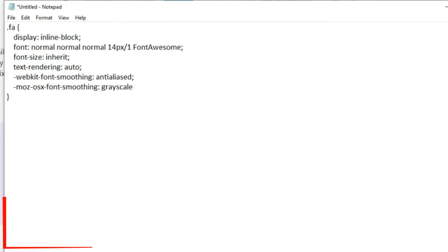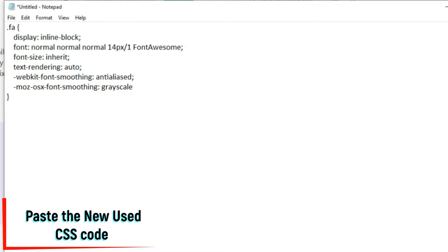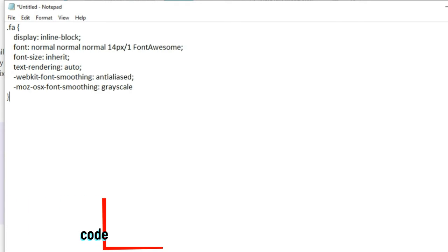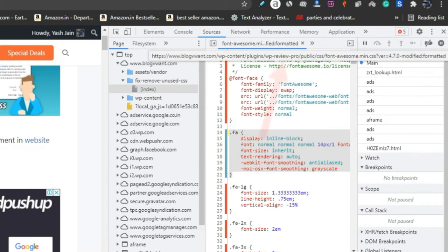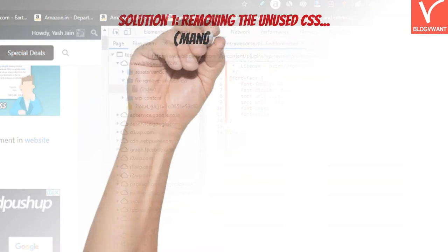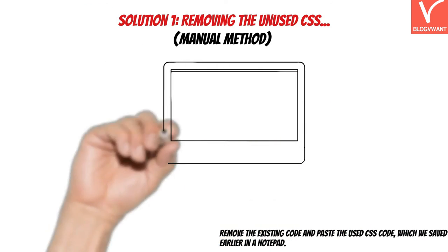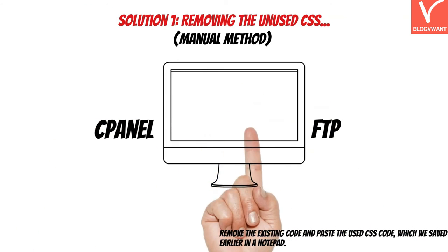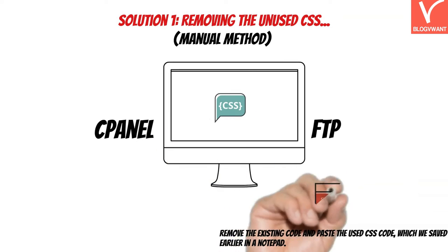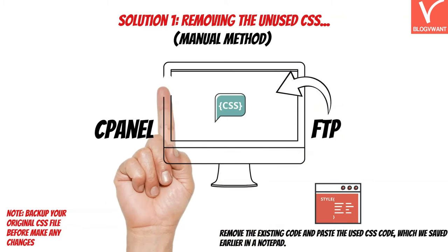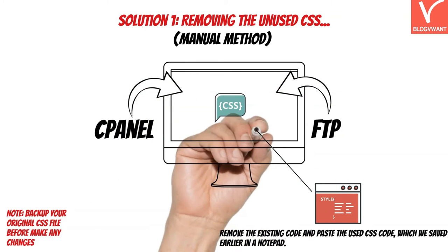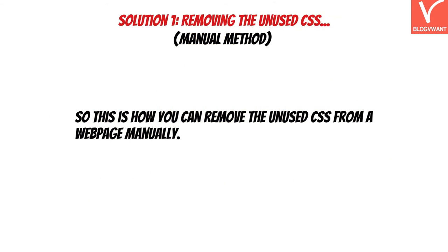Step 2: paste the new used CSS code. To do this, locate that CSS file in your website files. To find its location, hover over the CSS file name shown at the top of the Chrome DevTools window — it will display the full file directory. Once you have the directory, navigate to your website files via cPanel or FTP, open the public HTML folder, find the CSS file, remove the existing code, and paste the used CSS code saved earlier in Notepad.